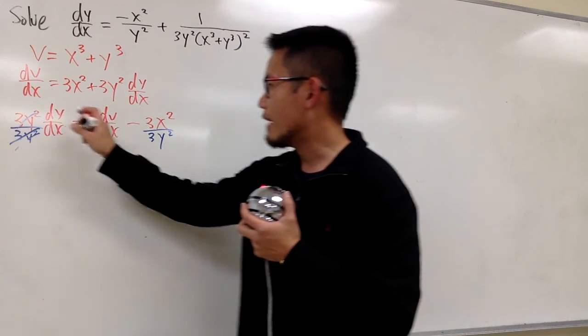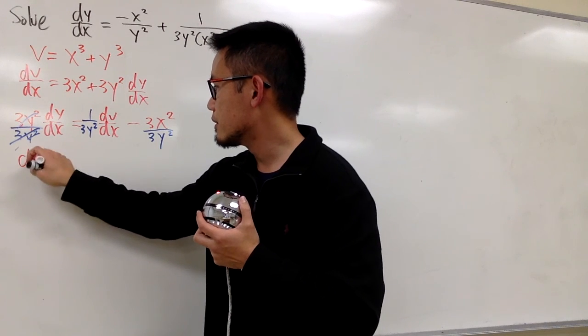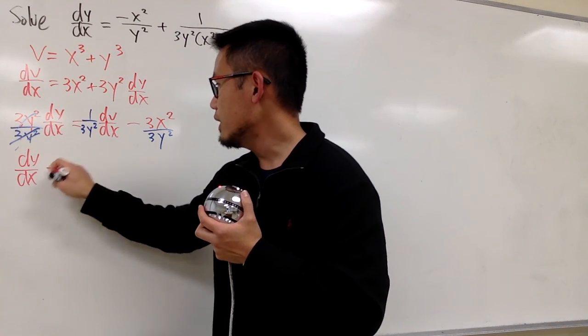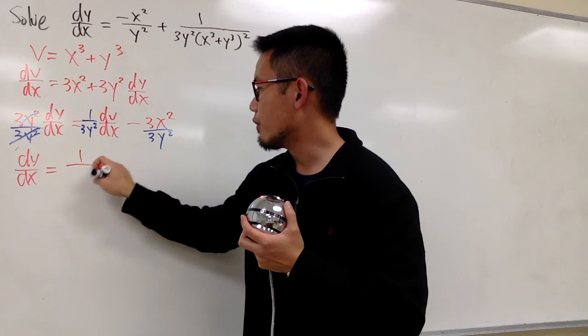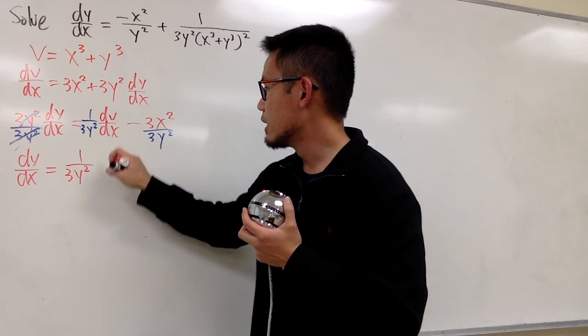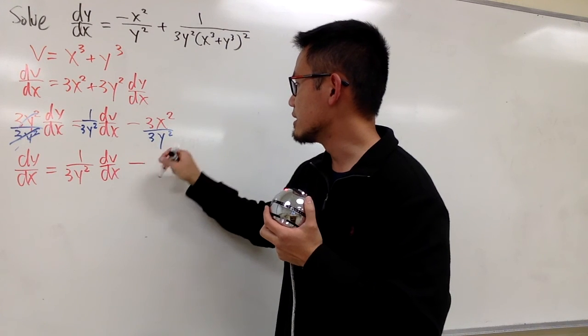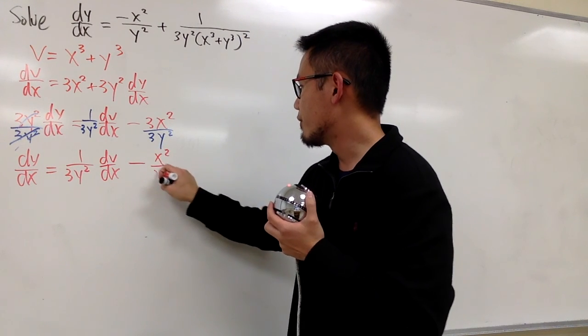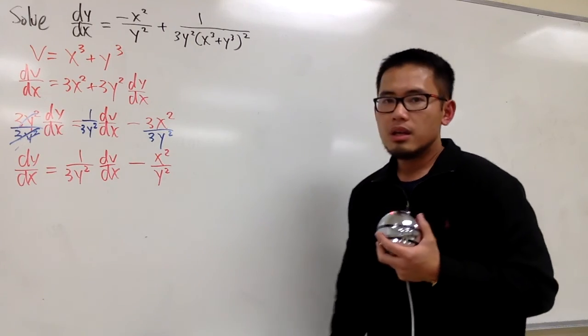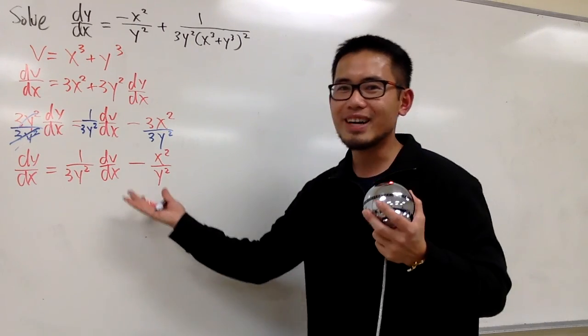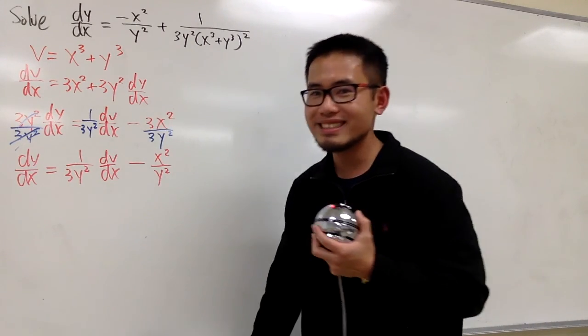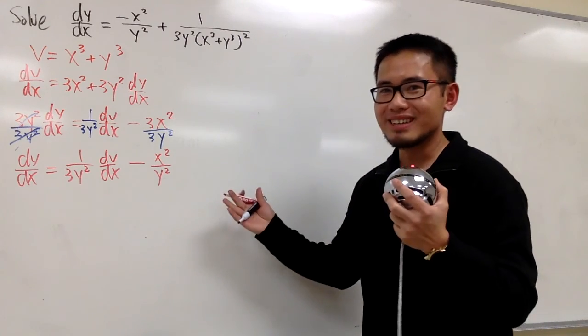So from here, we will have the dy dx by itself equals to this, which is 1 over 3y squared dv dx, and let's say this is minus, so 3 cancels out, so we have x squared over y squared. Alright, these are the ingredients that we have. Let's see what will happen. Hopefully everything works out nicely.